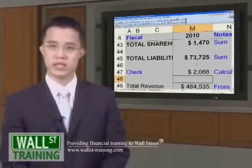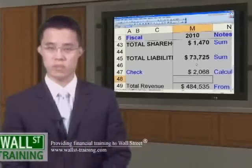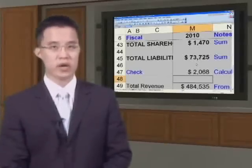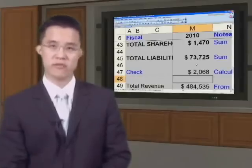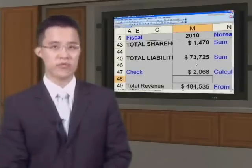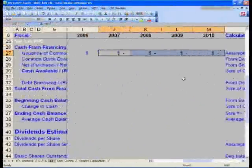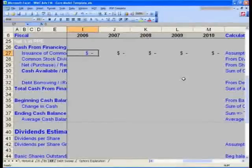Welcome back to Wall Street Training's advanced financial model building. The core model you have completed thus far covers the income statement and balance sheet in a first pass. Now let's focus our attention on the cash flow statement, specifically common stock dividends.